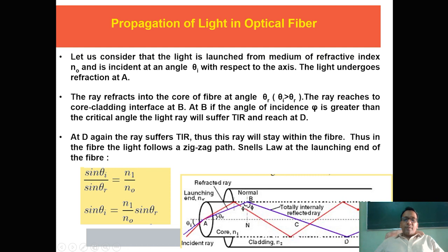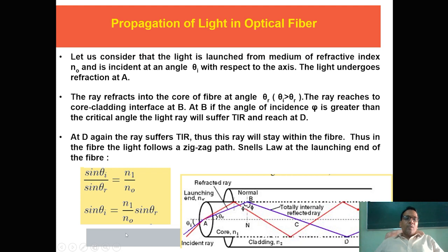For the propagation of light in optical fiber, this is the ray diagram. This is the core and the second part is cladding. A light ray incident at the first end of the core passes from the first medium with refractive index N0 — this is the launching end — at angle theta_i. Refraction takes place at the interface of core and cladding, where the condition for total internal reflection is fulfilled, so light reflects back within the core. The second beam also follows the same phenomenon of total internal reflection.